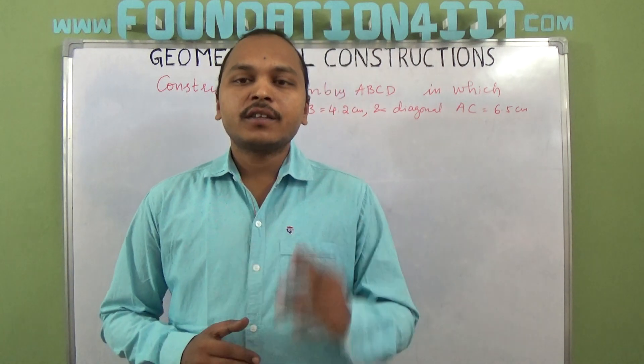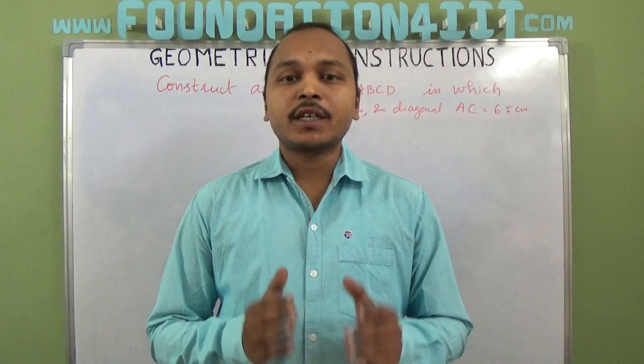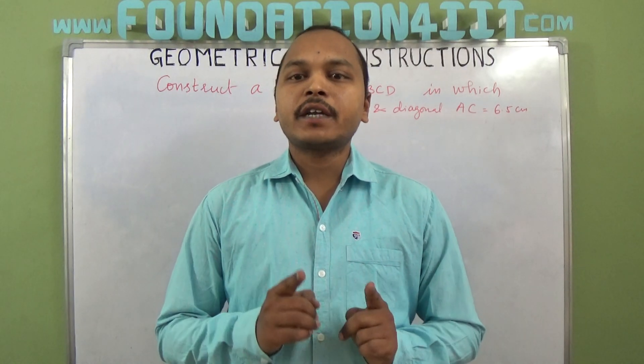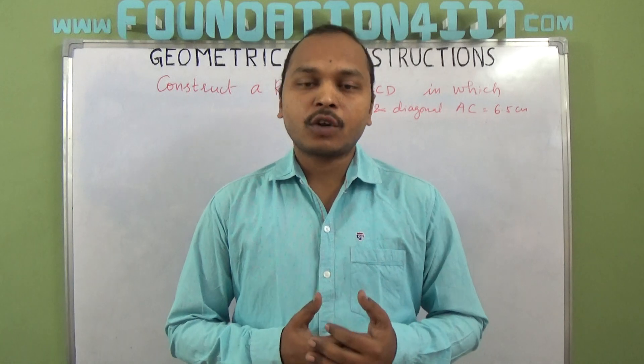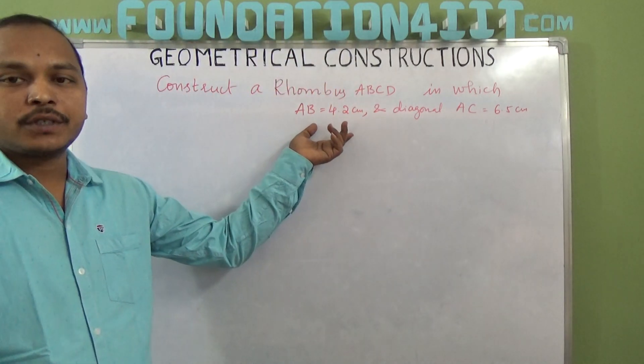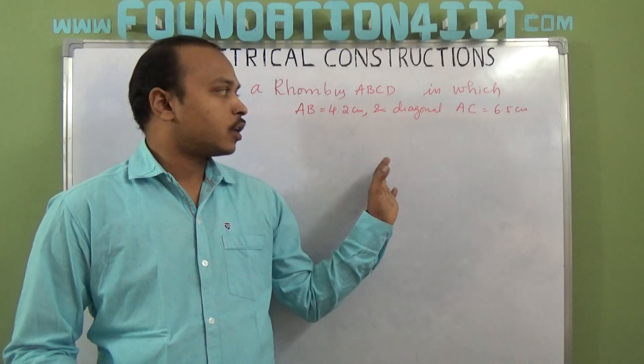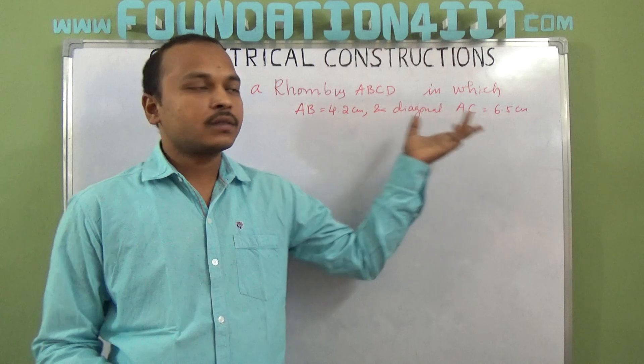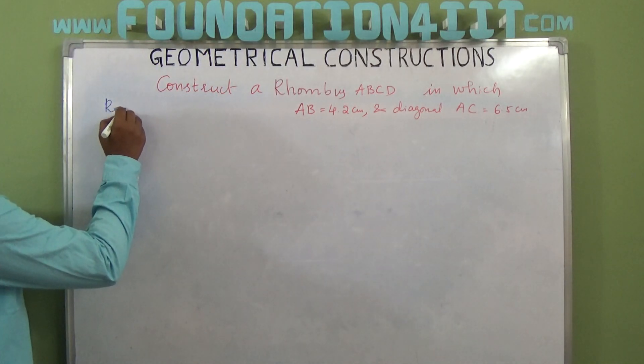Welcome to Educational Channel. In this video, I am going to explain how to construct a rhombus when one side and one diagonal are given. So observe the question: AB equals 4.2 centimeters, which is the side of the rhombus, and AC equals 6.5 centimeters, which is a diagonal of the rhombus.